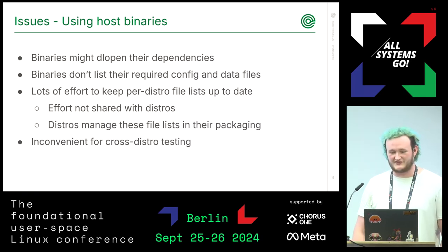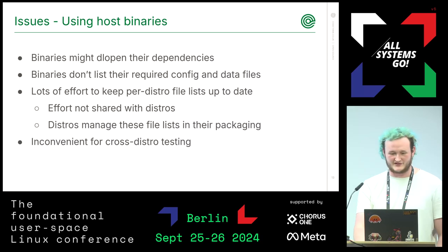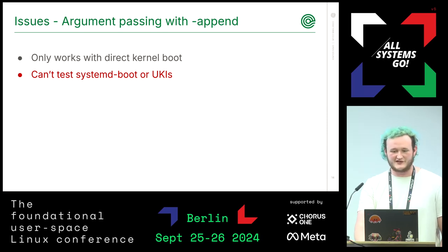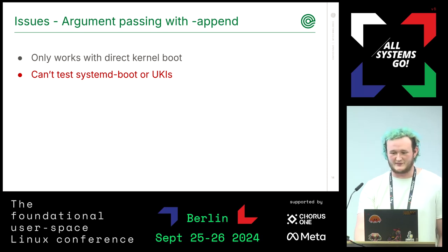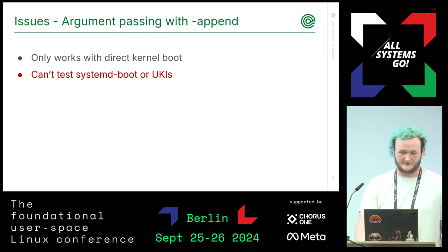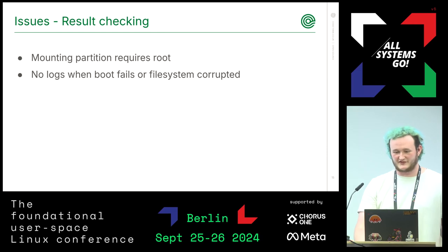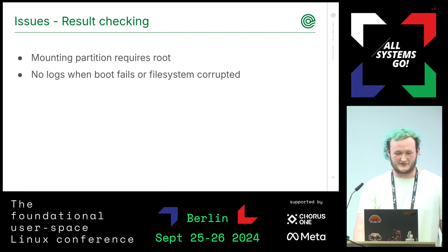Additionally, it makes cross-distro testing a pain, requiring a virtual machine or a container of the testing distro to perform all building and testing operations. One quirk of QEMU is that -append can only be used to pass kernel arguments if you are direct-kernel-booting, meaning you're supplying a kernel image to QEMU directly. This means it doesn't work at all for testing systemd-boot or UKI-based systems. Checking the results of the test without root is also tricky.